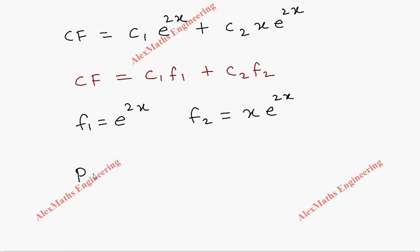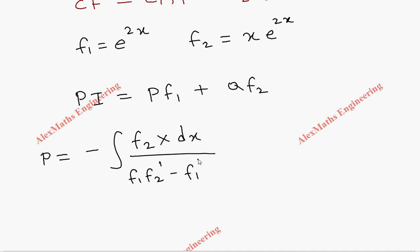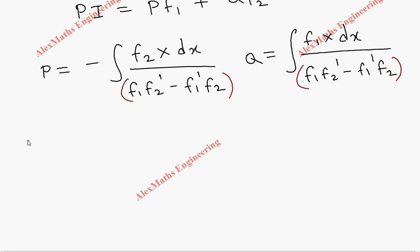Using f1 and f2 we can write the particular integral as p·f1 plus q·f2. The formula for finding p is: minus integral of f2 times X dx, divided by (f1 f2' minus f1' f2). And q is: integral of f1 times X dx, divided by (f1 f2' minus f1' f2). Both terms share the same denominator, so it is better to find it separately.